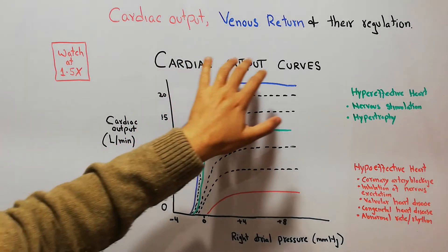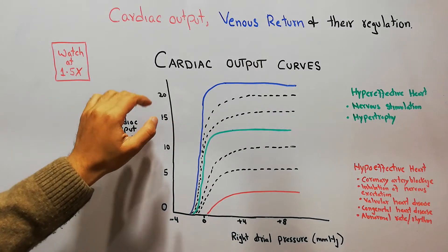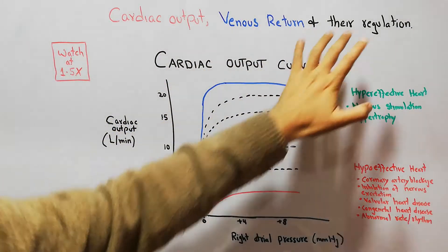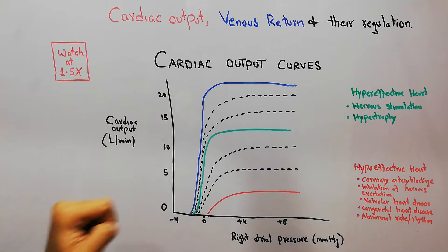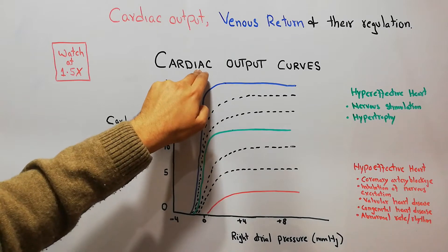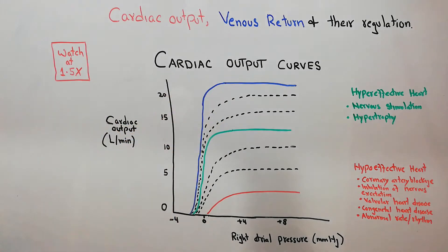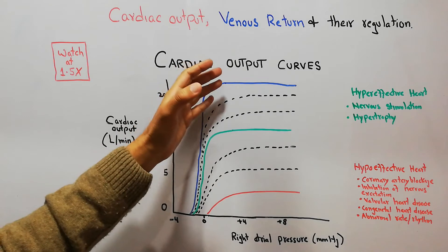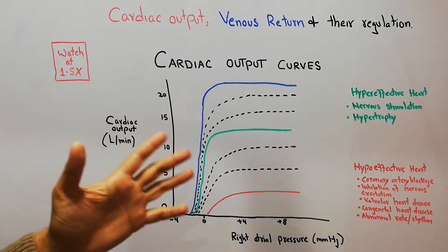Today we are going to discuss the cardiac output curves or cardiac function curves. We have started a new chapter about cardiac output, venous return, and their regulation. Cardiac output is the amount of blood the heart pumps every minute, and venous return is the amount of blood that returns to the heart every minute. Cardiac output initially increases with age and then decreases with age.